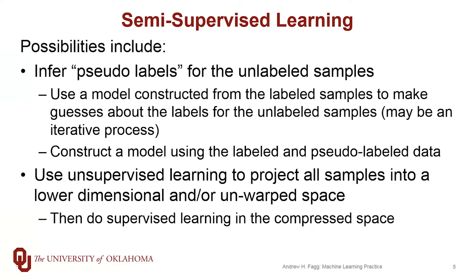On the regression side, we've already talked about using some sort of compression method as a pre-processing step on our input features — such as principal component analysis or isomap. Once we do the compression, we apply supervised learning to construct our models. The key is that the compression step only makes use of input samples and not the actual labels. So we can use both labeled and unlabeled data to compute that compression, and then learn the final regression step using just the labeled data.